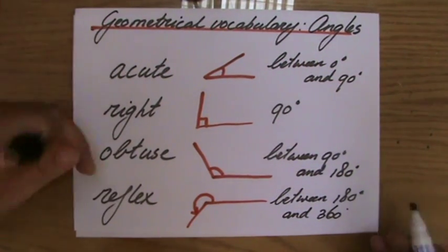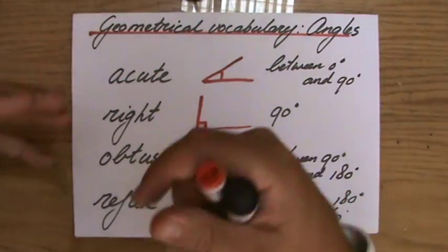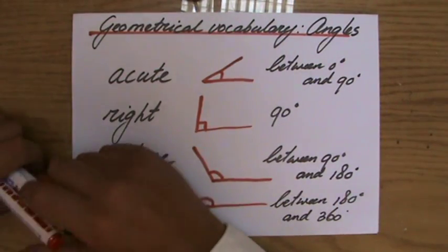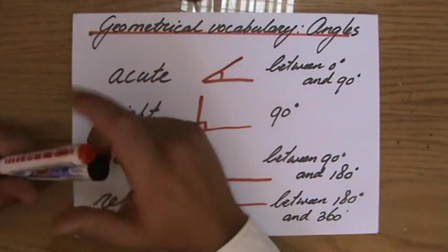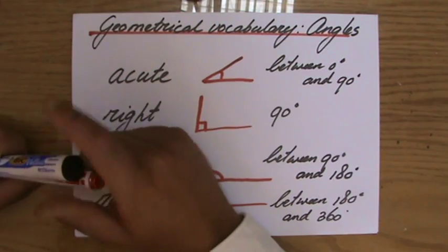So those are the four types of angles. We're going to talk in my next video about triangles and the important language there. You can share and like this video if it was useful and check my site explainingmaths.com. I'll see you later.